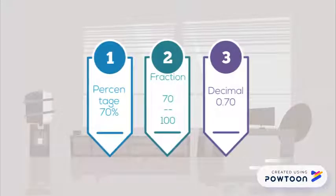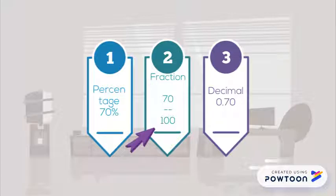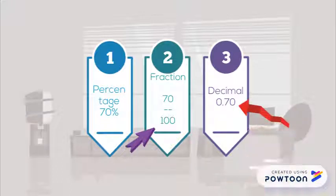Now let's take a look at 70%. To change it to a fraction, it's quite simple, because percentages are out of 100. So 100 becomes your denominator, and your percentage number becomes on top — so 70 out of 100. To change it to a decimal, since it's less than 1, it's 0 point, and then you just put your number: 0.70.